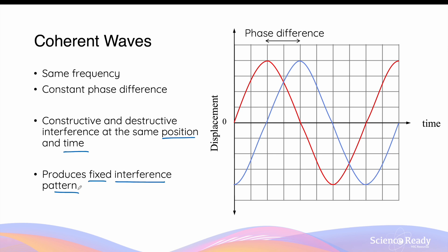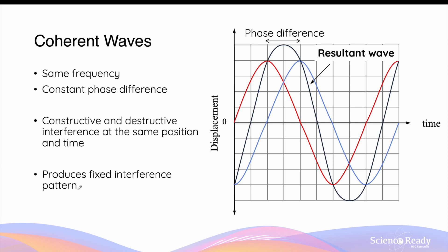This fixed interference pattern is predictable and repeats itself with time or distance. When you add or subtract the displacement between the red and blue wave, this is the resultant wave produced. The superposition between two coherent waves will produce a wave of the same frequency — so the black resultant wave here will have the same frequency as the red and blue waves.